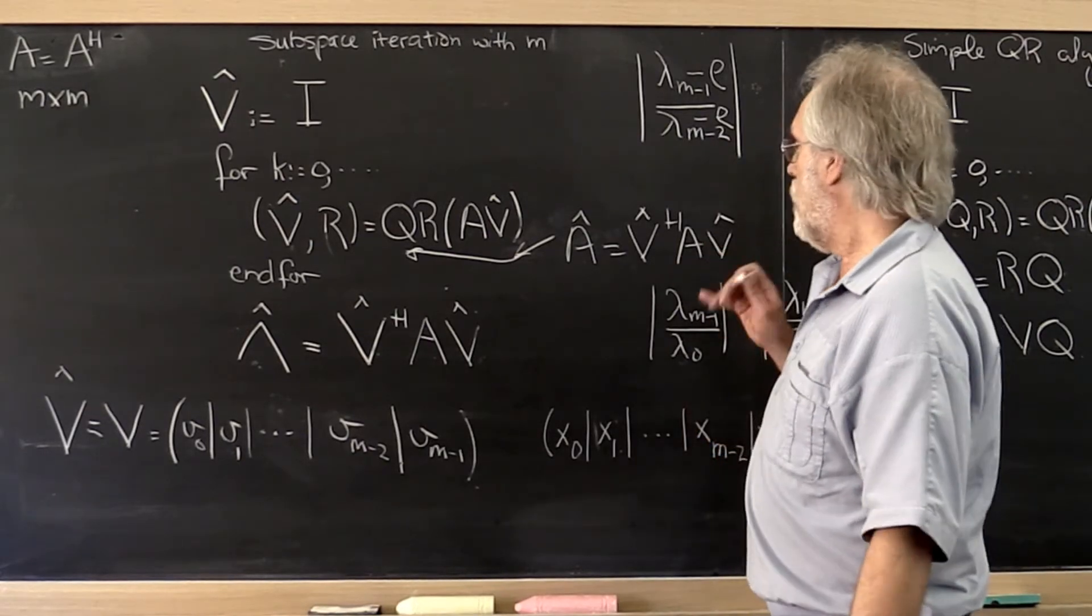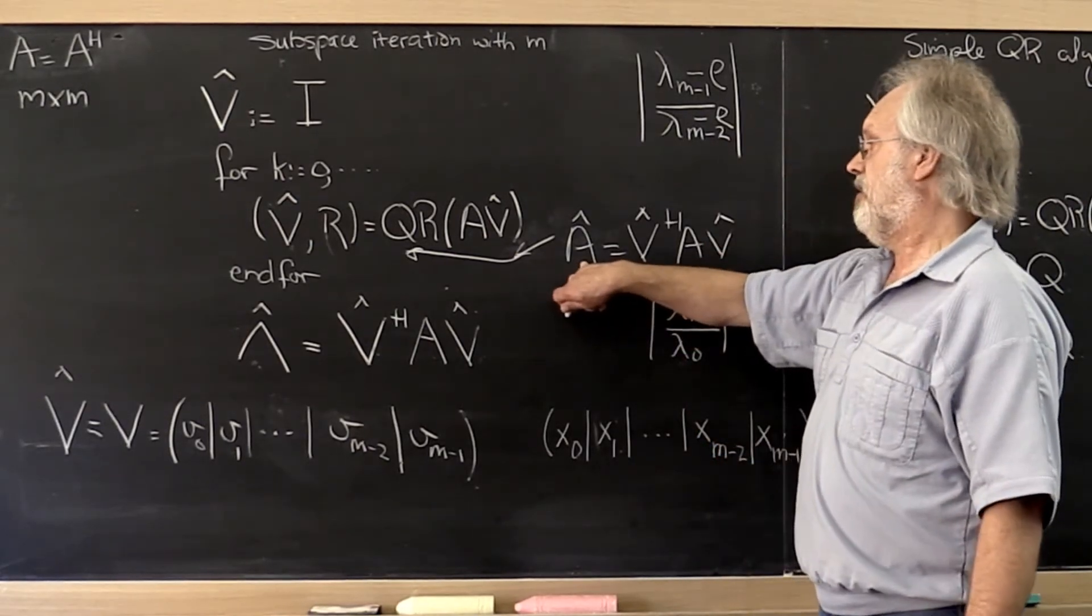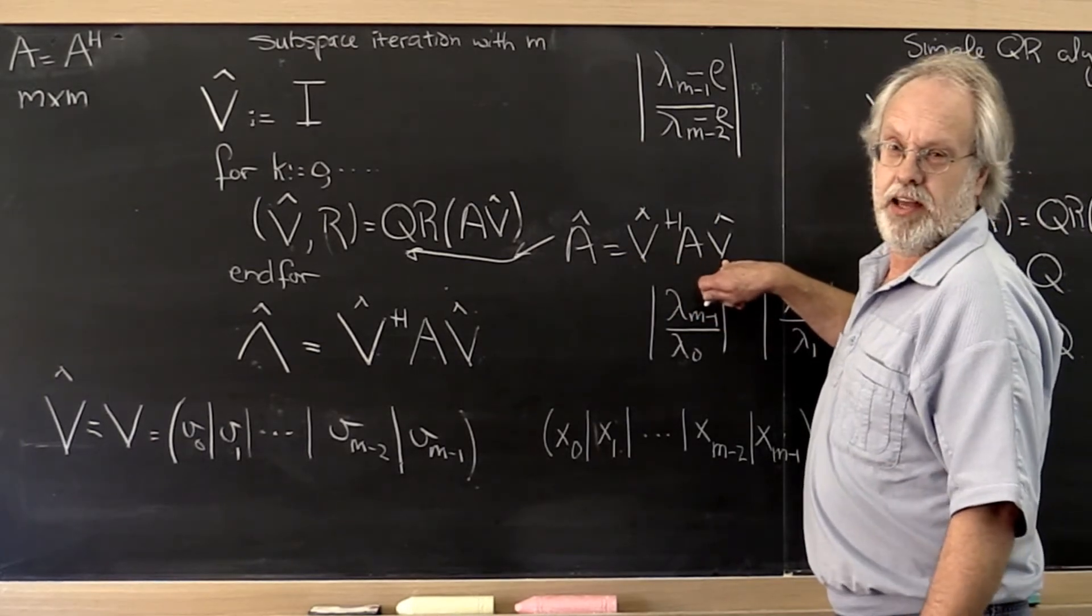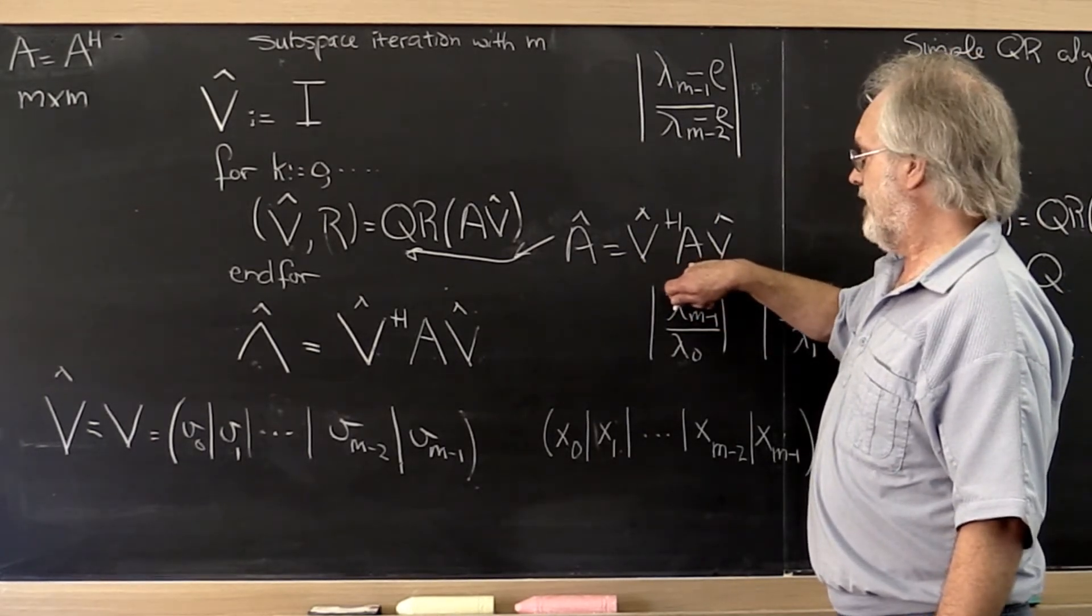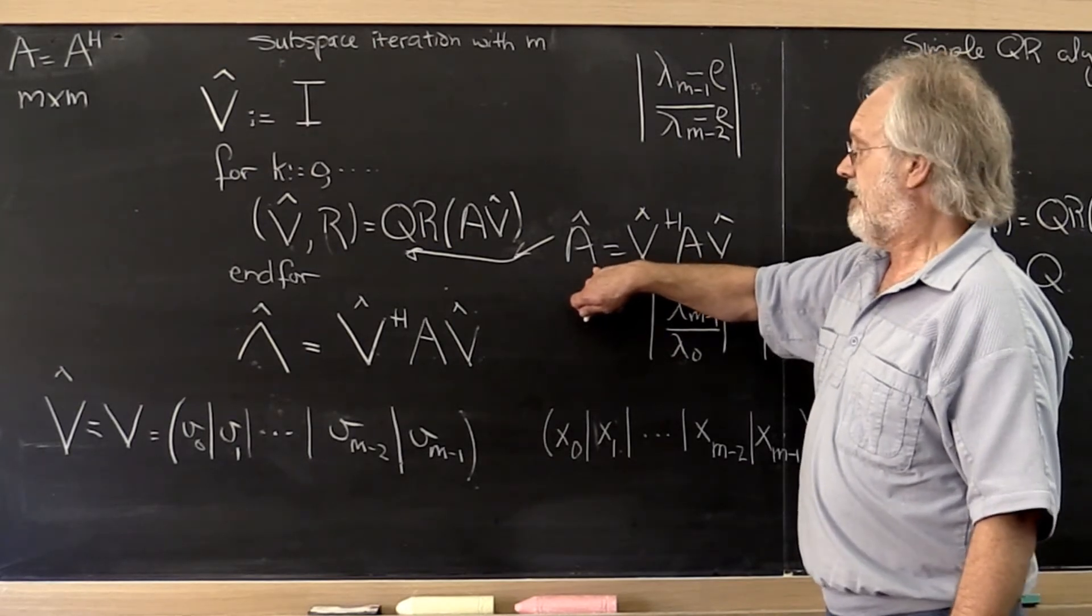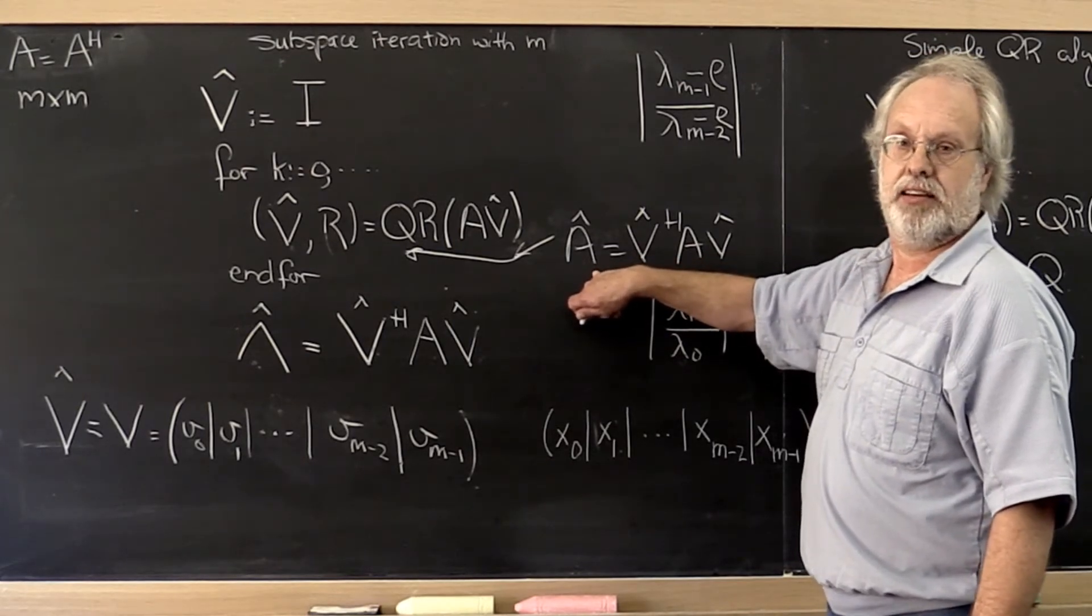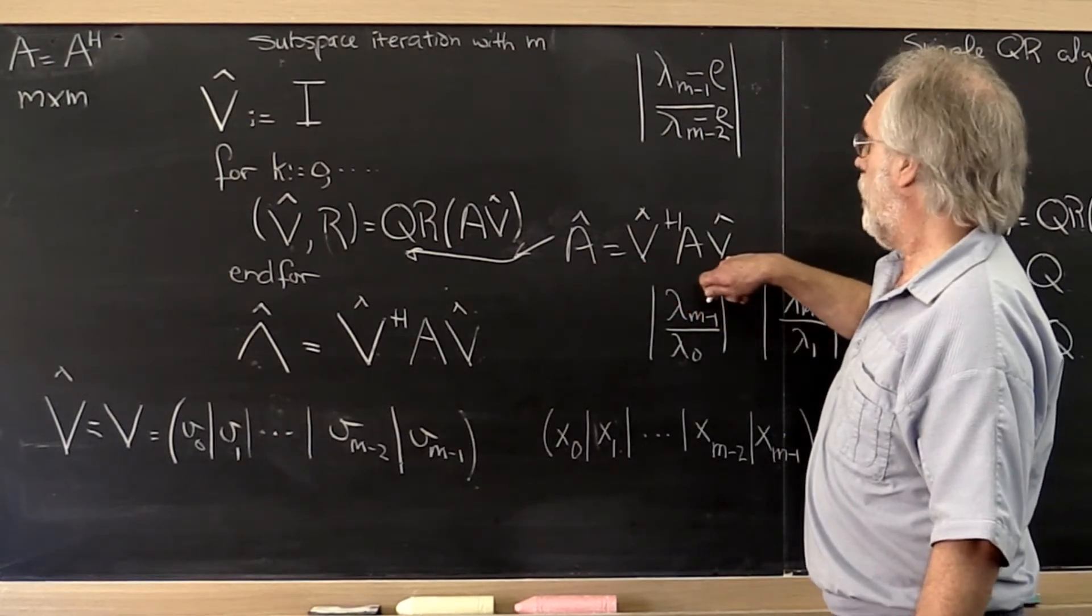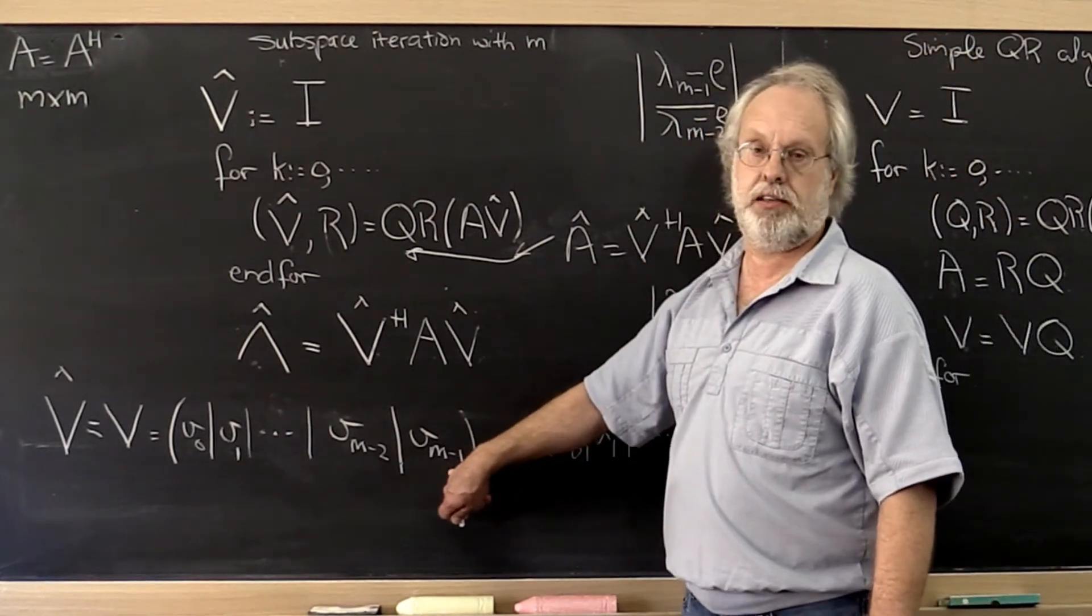And then we say, well, if we computed a hat along the way, if you think about it carefully, it is the m-1, m-1 entry in this matrix a hat that is exactly equal to the Rayleigh quotient computed with vm-1.